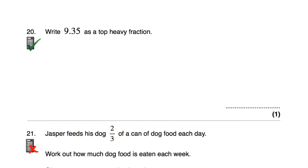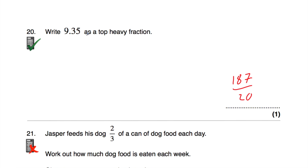Question number 20 is a calculator question: write 9.35 as a top-heavy fraction. Just type in 9.35 and press equals on your calculator, and it tells you the answer is 187 over 20. It's cancelled down as well.